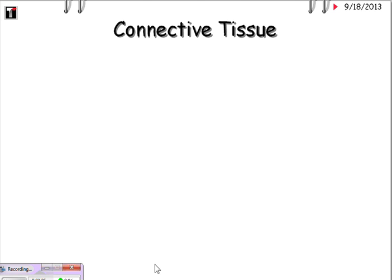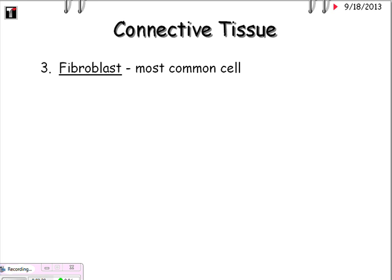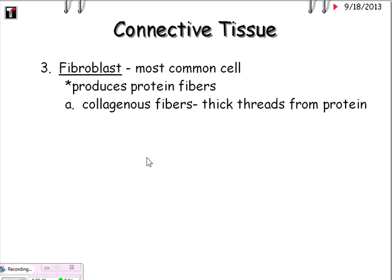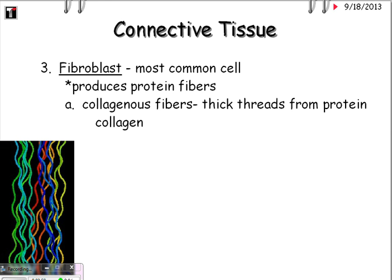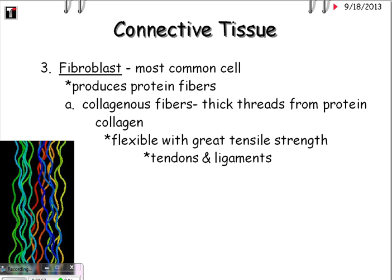The most common of all the cells is the fibroblast. 'Fibro' means fibers, and 'blast' means growing or budding — so fibroblasts grow our protein fibers. There are three types: collagenous fibers, which are thick threads of protein made out of collagen. They are flexible with great tensile strength, and this is what your tendons and ligaments are made from.